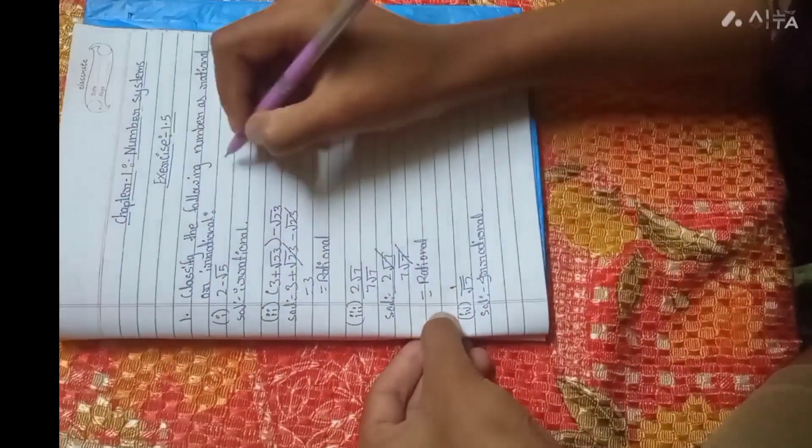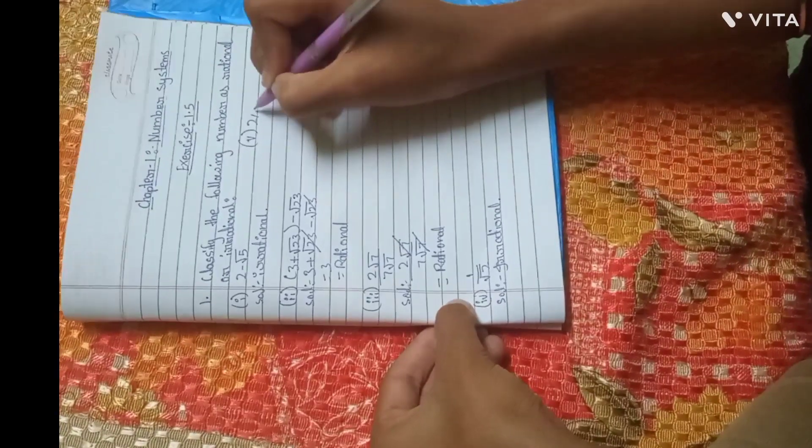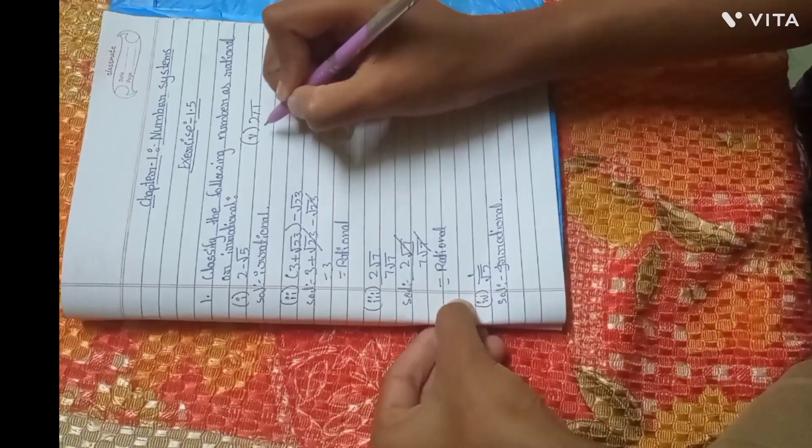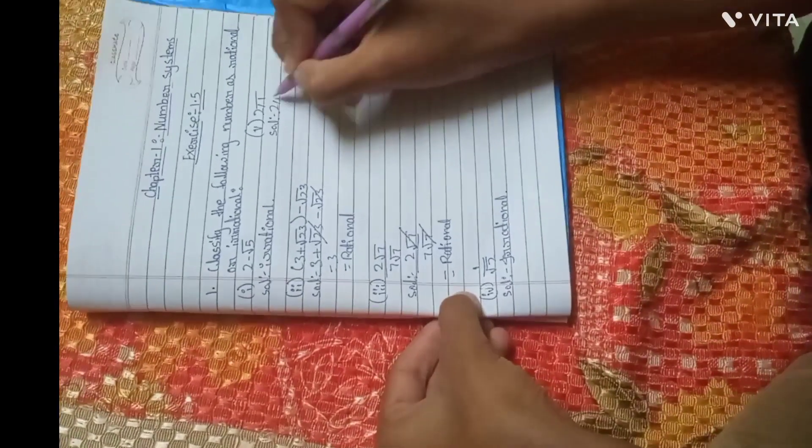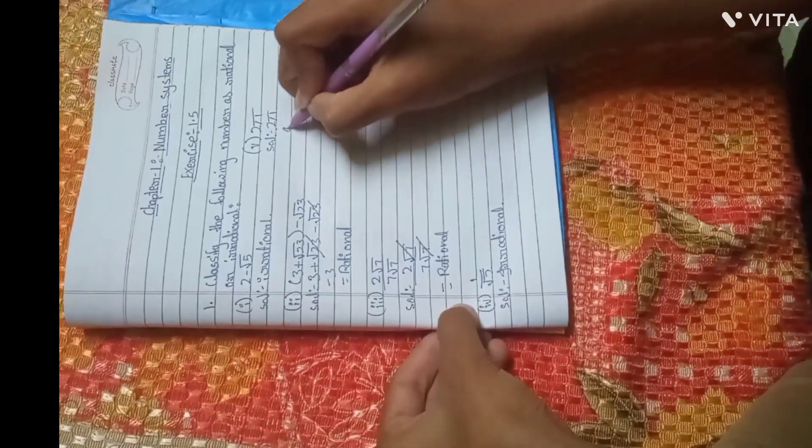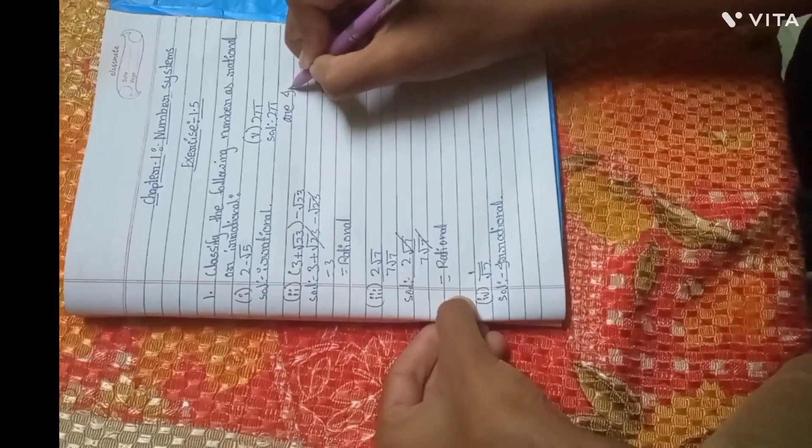Then we will write the fifth is 2 pi. The pi is irrational, so we will write it irrational. 2 pi are irrational.